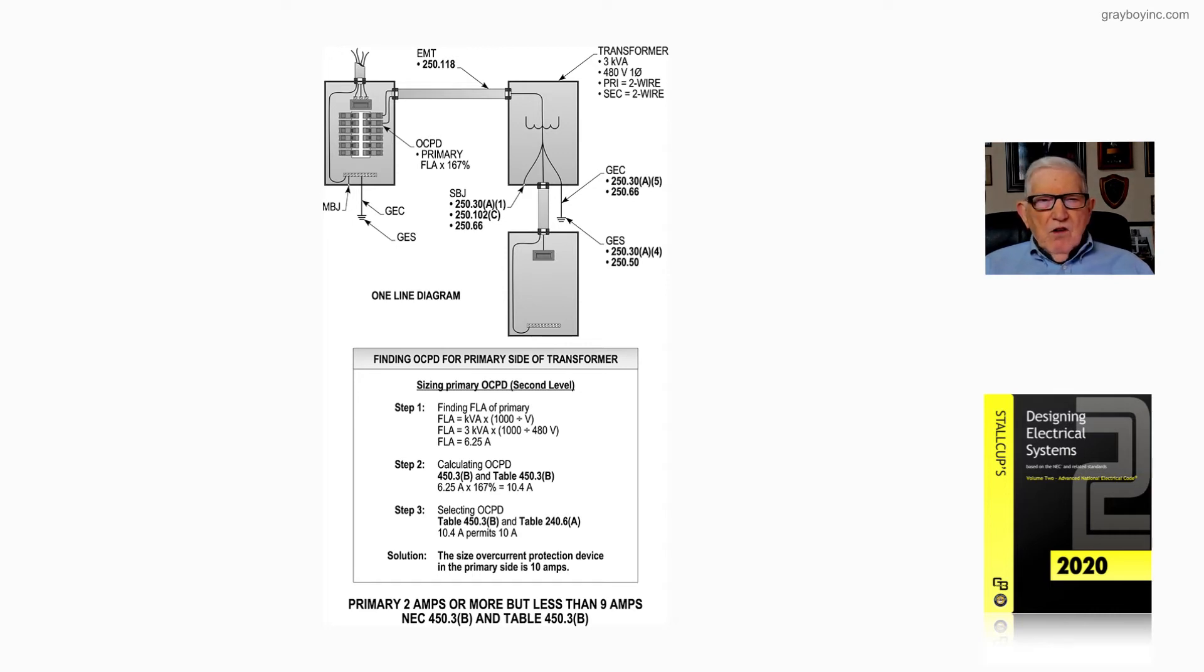But now, the grounding is the same, we're going to have a supply side bonding jumper here, because it's not at the service, it's at a separately derived system location.